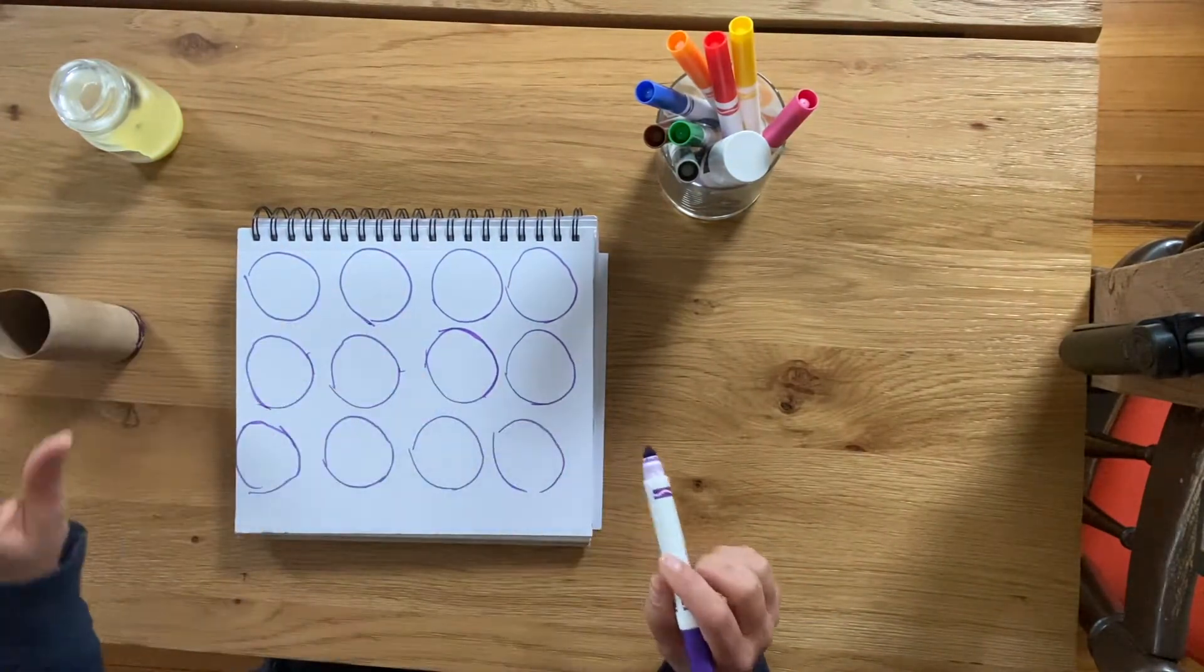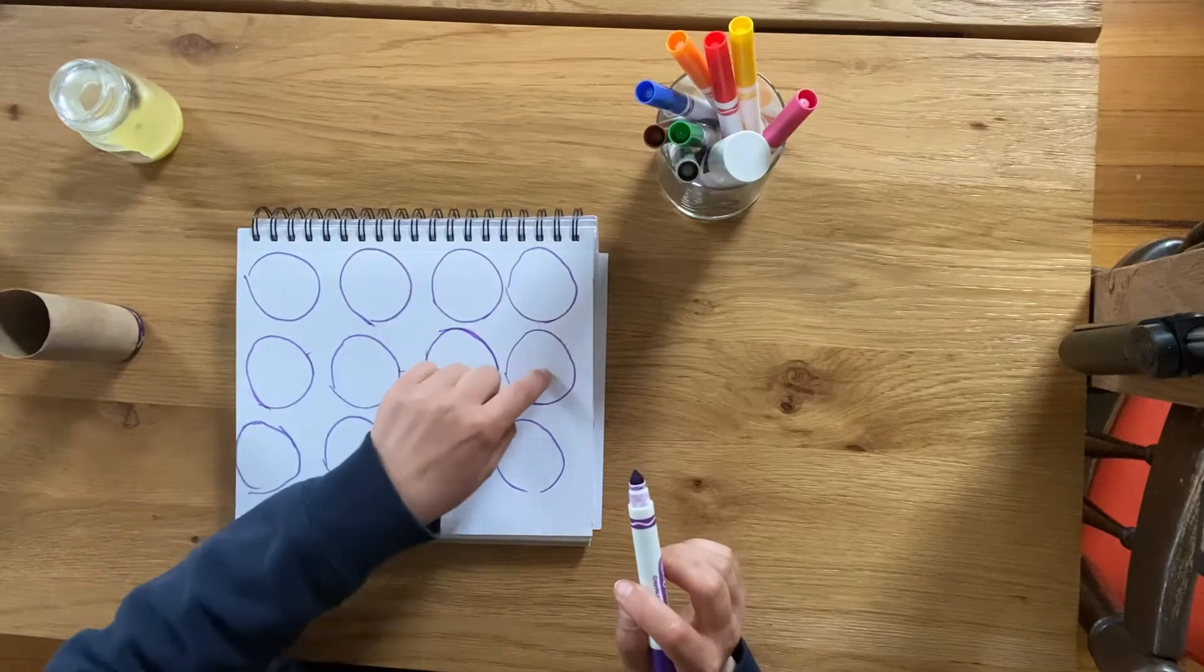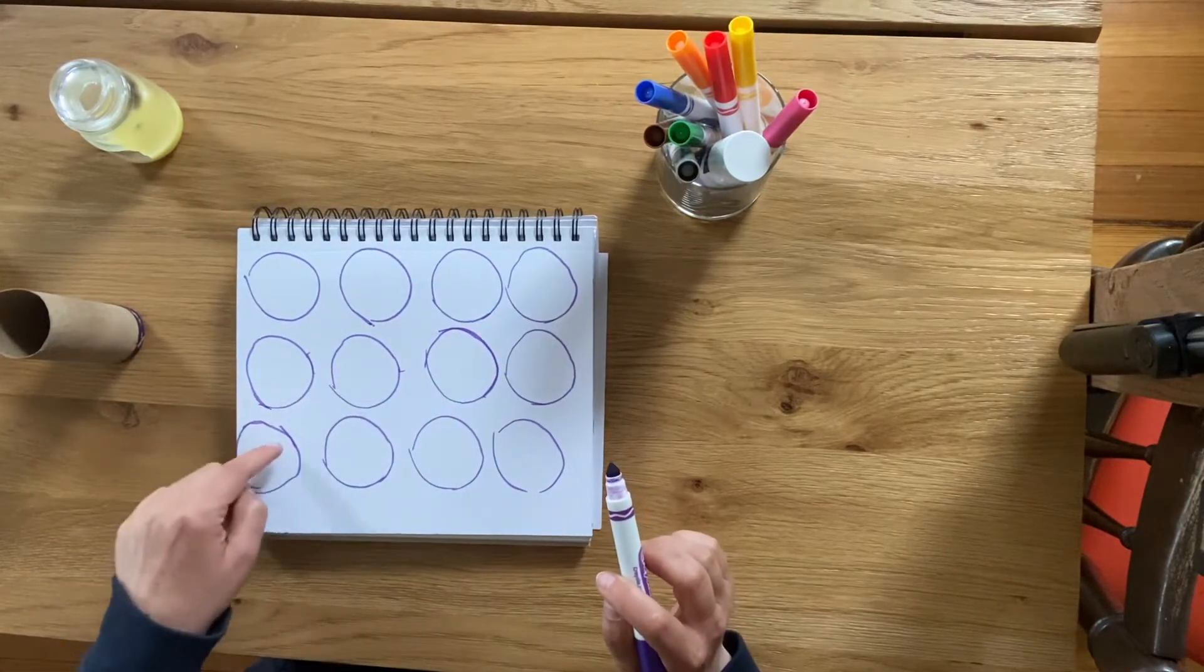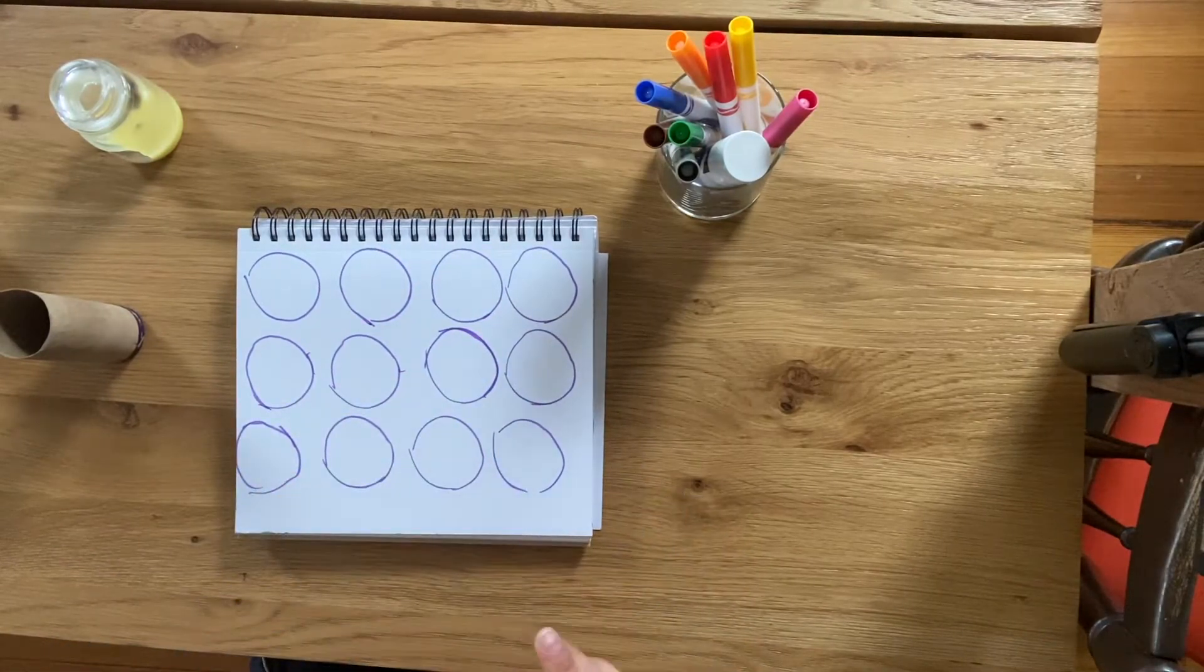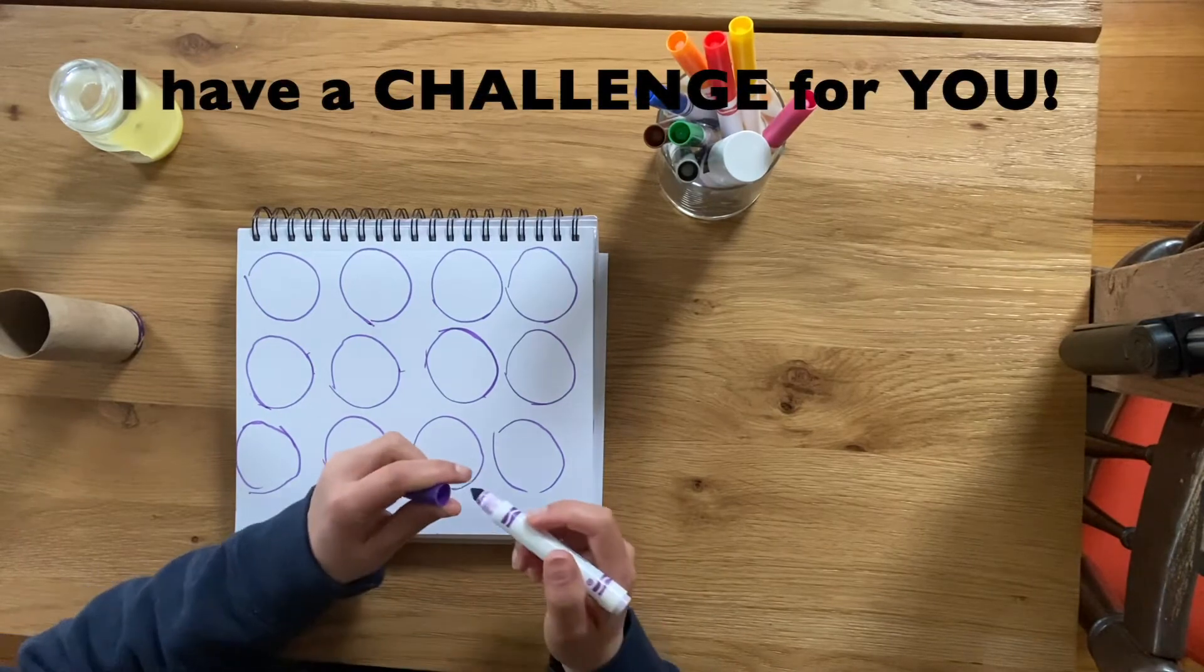So now I have one, two, three, four, five, six, seven, eight, nine, ten, eleven, twelve circles and I have a challenge.